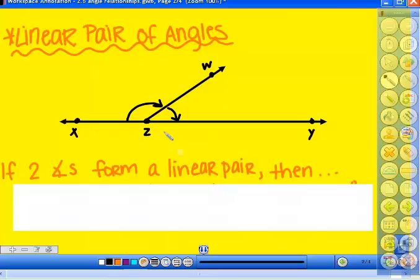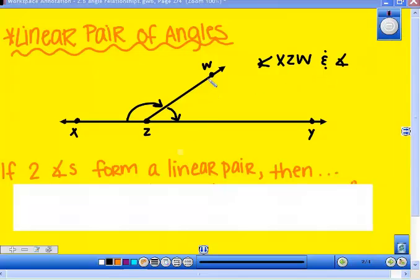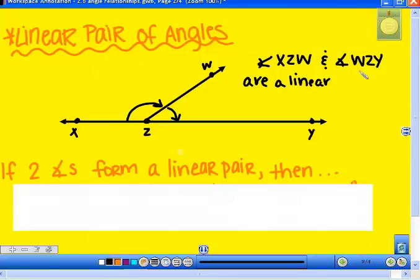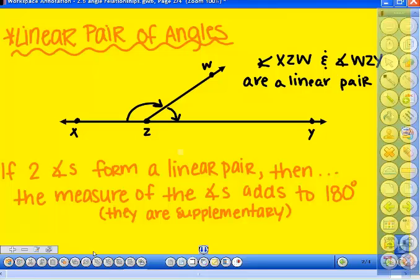So we would say that angle XZW and angle, make sure you are practicing naming your angles correctly because that's not going to go away, we're going to use that all year. So if you trace WZY are a linear pair. Two angles that form a straight line together, and we know that a straight line is called a straight angle, it's 180 degrees. So the rule or conjecture you need to write states that if two angles form a linear pair, then the measure of the angles adds up to 180 degrees, or you could say they are supplementary.